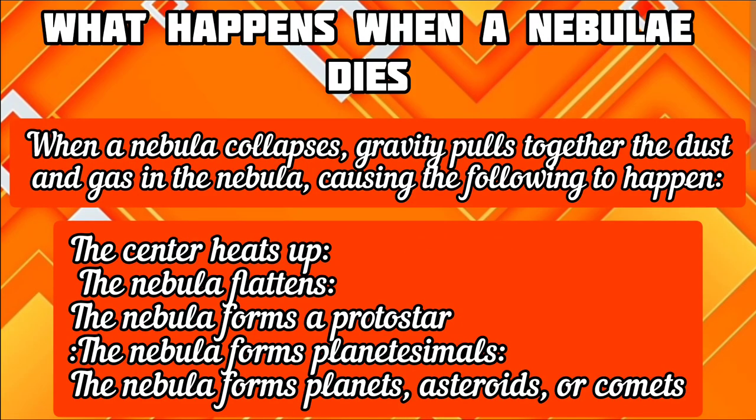What happens when a nebula dies? When a nebula collapses, gravity pulls together the dust and gas in the nebula, causing the collapse to happen. The center heats up, the nebula flattens, and the nebula forms a protostar. Eventually, the nebula forms planets, asteroids, or comets.